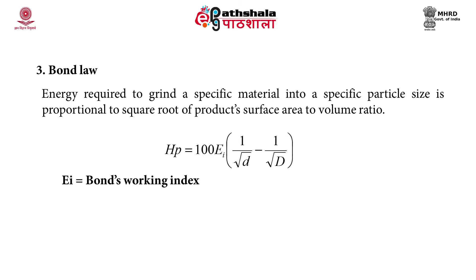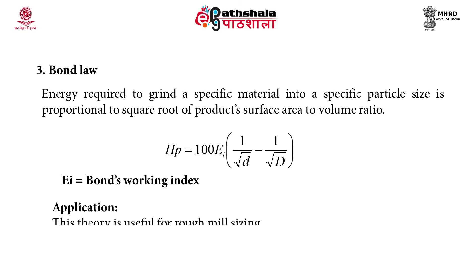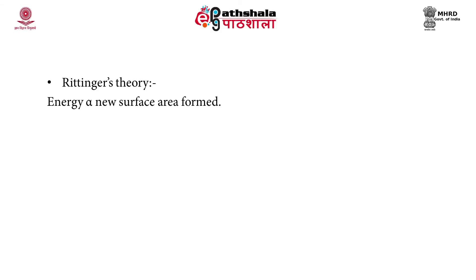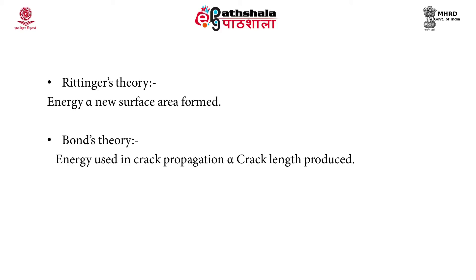Bond's law states that the energy required to grind a specific material to a specific particle size is proportional to the square root of the product's surface area to volume ratio, given by: HP = 100 E_I × (1/√d − 1/√D), where E_I is Bond's working index. This theory is useful for rough mill sizing and the work index is useful for comparing energy efficiency of milling operations. To summarize: Rittinger's theory — energy proportional to new surface area formed; Bond's theory — energy proportional to crack length produced; Kick's theory — energy proportional to ratio of change in size.